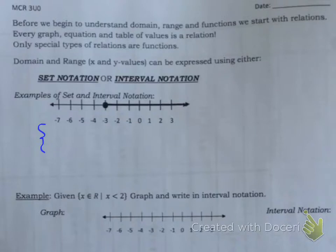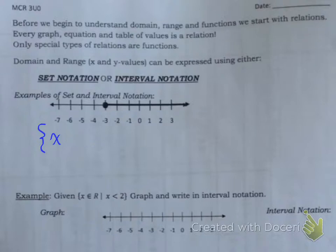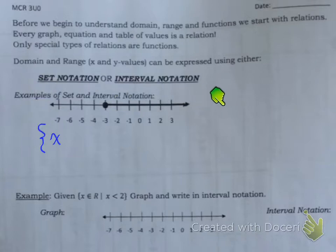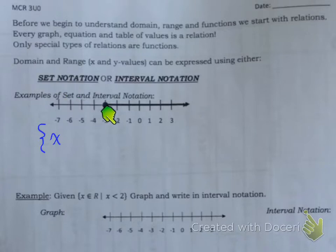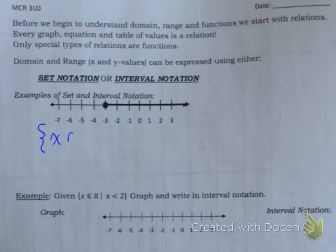A set notation starts off with a set bracket - it's kind of like the capital of a sentence, the beginning starts with a capital. And then we have X belongs to real. So X is this whole thing across here. Think of the X and Y axis - the X runs horizontally, so for any horizontal line segment, any sort of linear graph, we will represent it as X. Now watch how we draw it. First you draw a C, and then you draw the middle. That is the symbol that means belongs to.